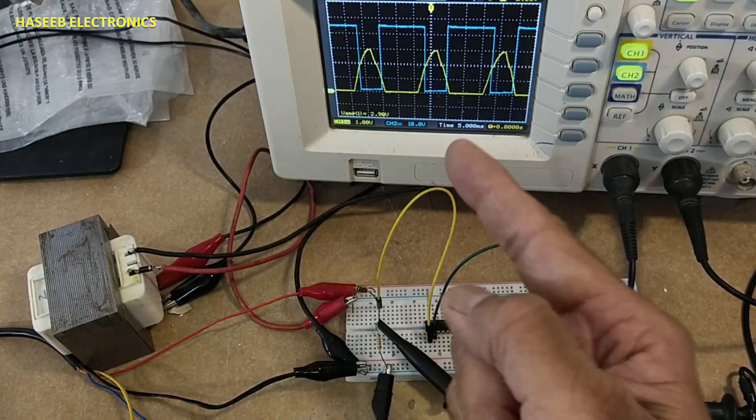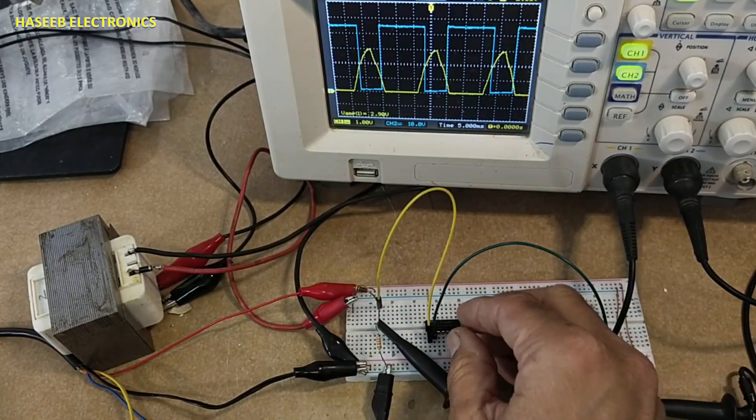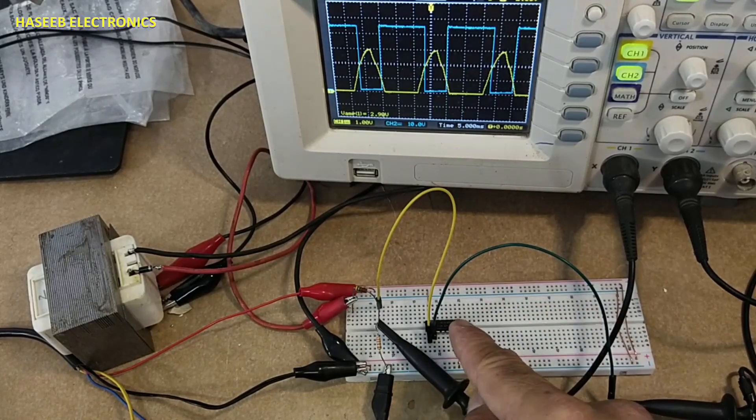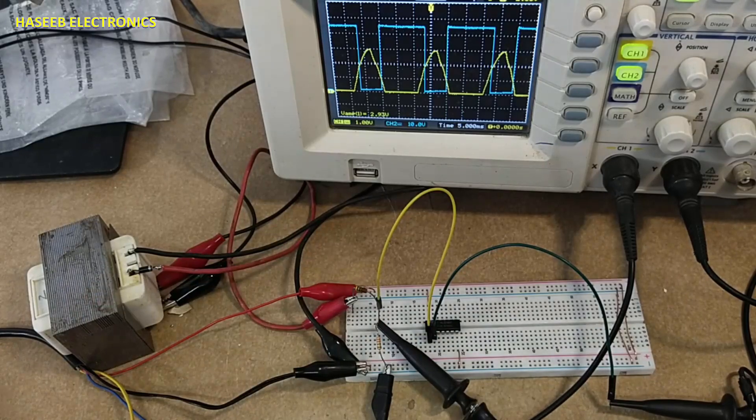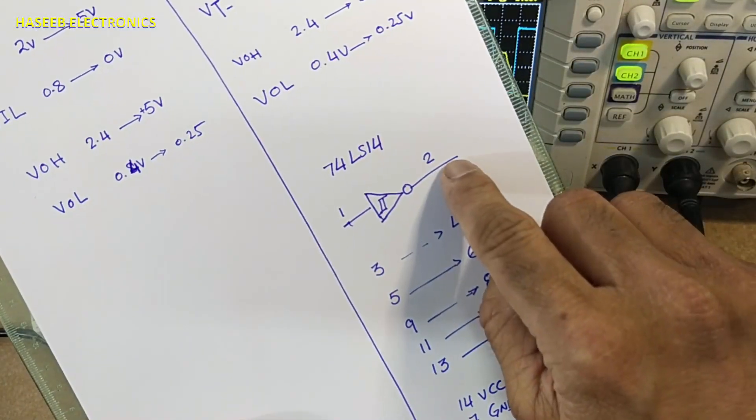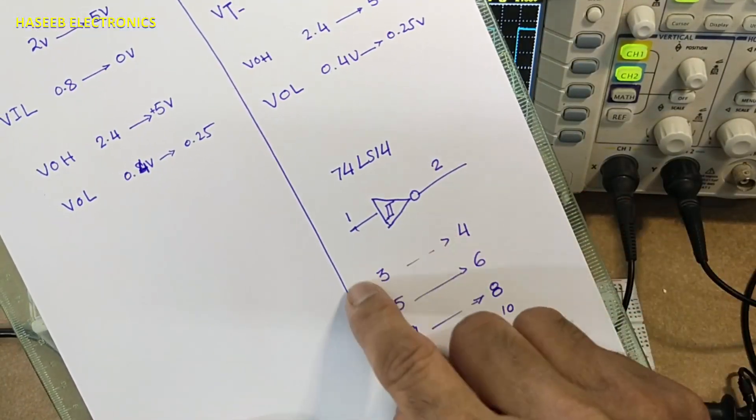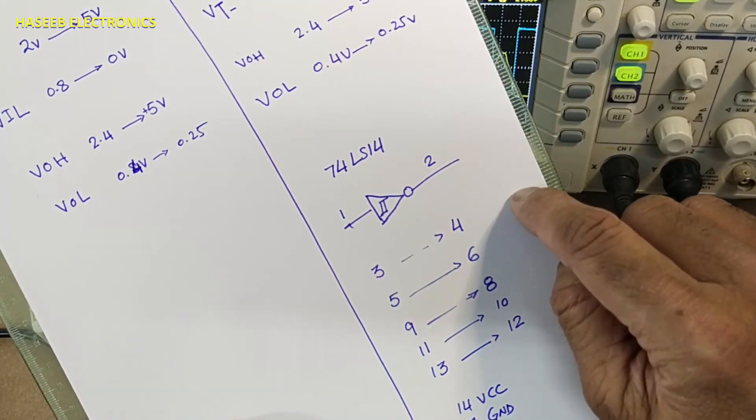If we want to take in-phase signal, at that time we will cascade two inverters in series. What we will do - we will inject this signal to pin number 3 and we will take output from pin number 4.